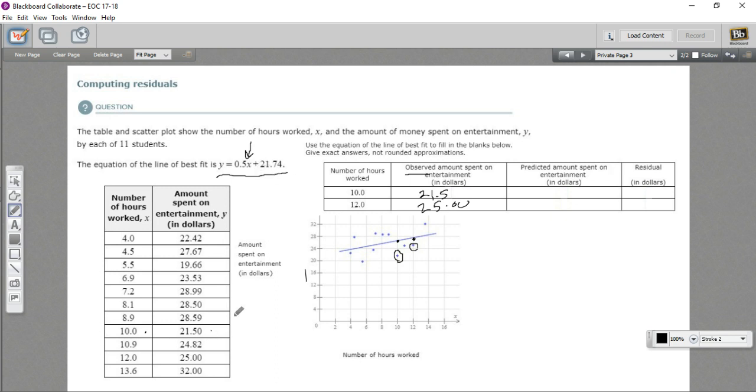So in the case of the first one, we would have Y equals 0.5 times 10 plus 21.74. So that is 5 plus 21.74, which is 26.74. So the predicted amount would be $26.74.